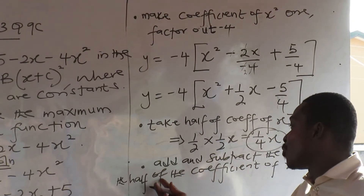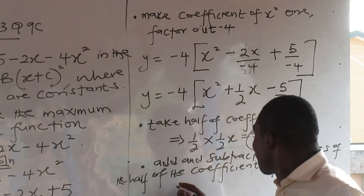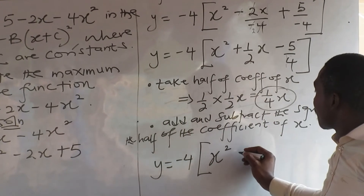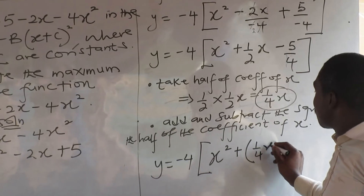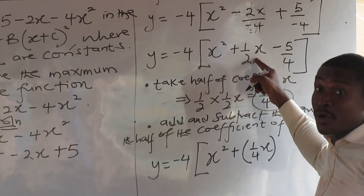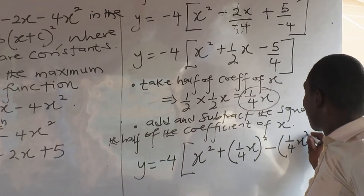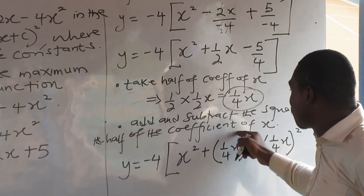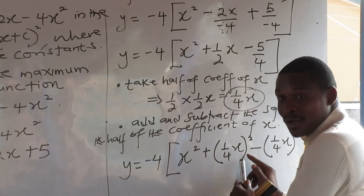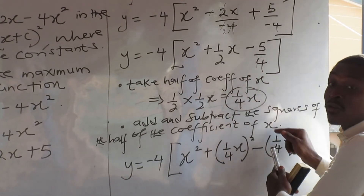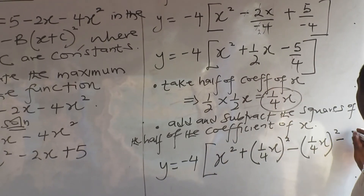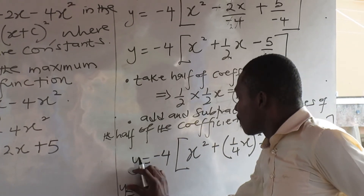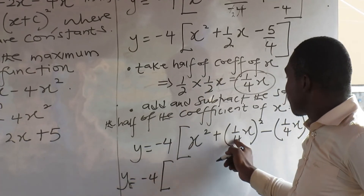Add and subtract the square of the half of the coefficient of x. We are writing all these steps so you can remember during revision. From here, I am going to add and subtract. That is my x squared, and I am going to add one quarter x. According to the normal progression, you subtract the square of the half-coefficient. So I add the square of the half of the coefficient of x, then I subtract the square of that same half-coefficient, and then I carry along the minus five over four.